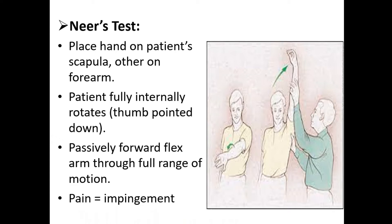Neer's test: The physiotherapist places one hand on the patient's scapula and the other hand on the forearm. The patient fully internally rotates the arm with thumb pointed downward. The examiner then passively forward flexes the arm through the full range of motion. Pain indicates impingement.